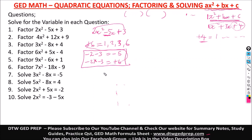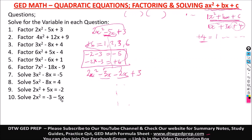So we replace negative 5x in the equation. We write 2x squared, then use the higher number first: negative 3x, then negative 2x. When you add negative 3x and negative 2x you get negative 5x — that's how we're replacing it. Then drop down the positive 3. Now we need to factor using the greatest common factor, GCF.